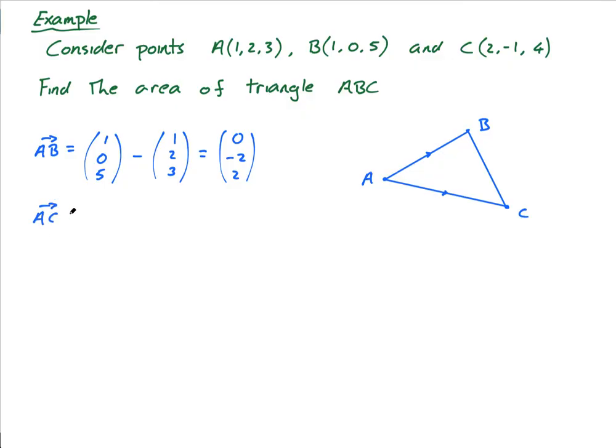Now let's get AC. AC is equal to c minus a. C is (2,-1,4) minus a which is again (1,2,3). 2 minus 1 is 1, negative 1 minus 2 is negative 3, 4 minus 3 is 1.